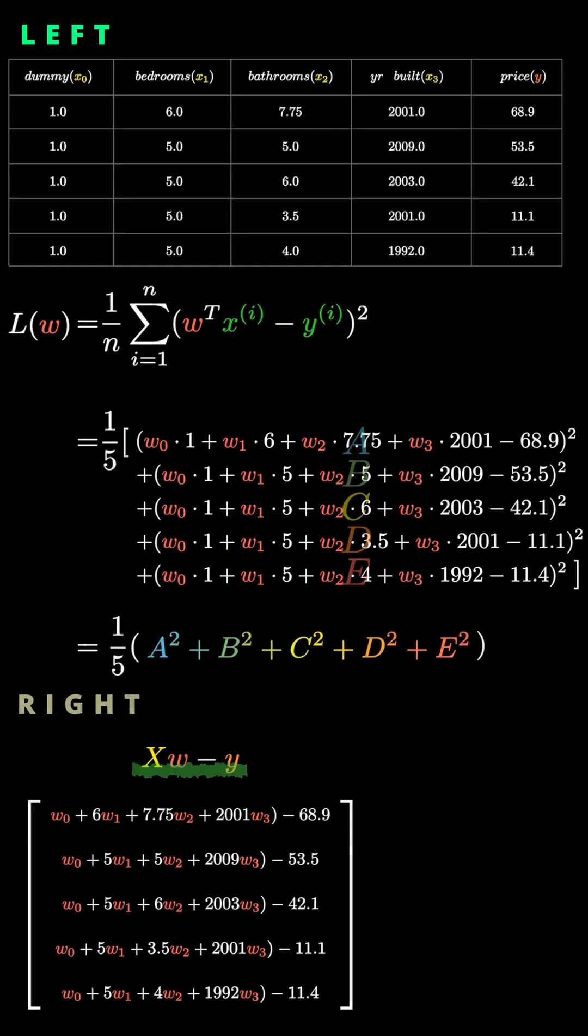Since the formula is getting a bit long, let's label each row as A, B, C, D, and E.